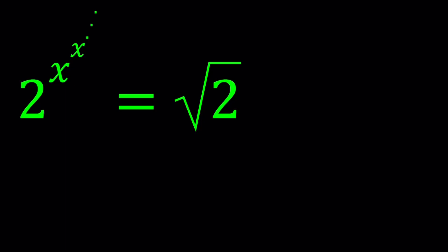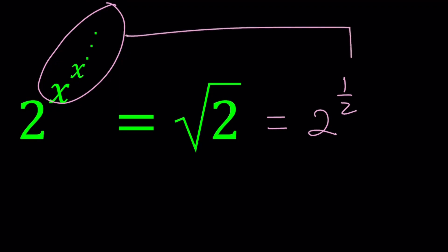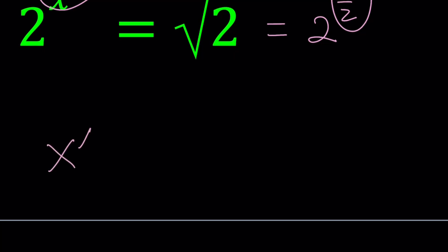First of all, 2 to the power of something equals square root of 2. I can write the square root of 2 as 2 to the power of 1 half, and that tells me right away, since the bases are the same, that this whole expression is equivalent to 1 half. So we have x to the power x to the power x to the power dot dot dot equals 1 half.